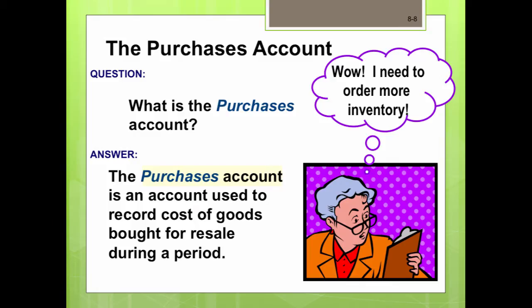The purchase of merchandise for resale is a cost of doing business. The purchase of merchandise is debited to the purchases account. Purchases is a temporary expense account classified as cost of goods sold. The cost of goods sold is the actual cost to the business of the merchandise sold to the customer — it is the cost to purchase an item that you will then resell at a higher price to make a profit.